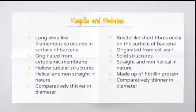Flagella has a hollow tubular structure whereas fimbria is a solid structure. Flagella is helical and non-straight in nature whereas fimbria is straight and non-helical. Comparatively, flagella is thicker than fimbria, whereas fimbria is thinner than flagella.